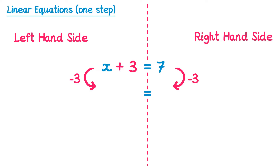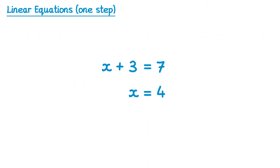If you subtract 3 from the left hand side that will cancel out the plus 3 that's there — 3 take away 3 is 0, so this just leaves you with x. On the right hand side we need to do 7 take away 3, which gives you 4. We've now solved the equation because we found the value of x: x equals 4.